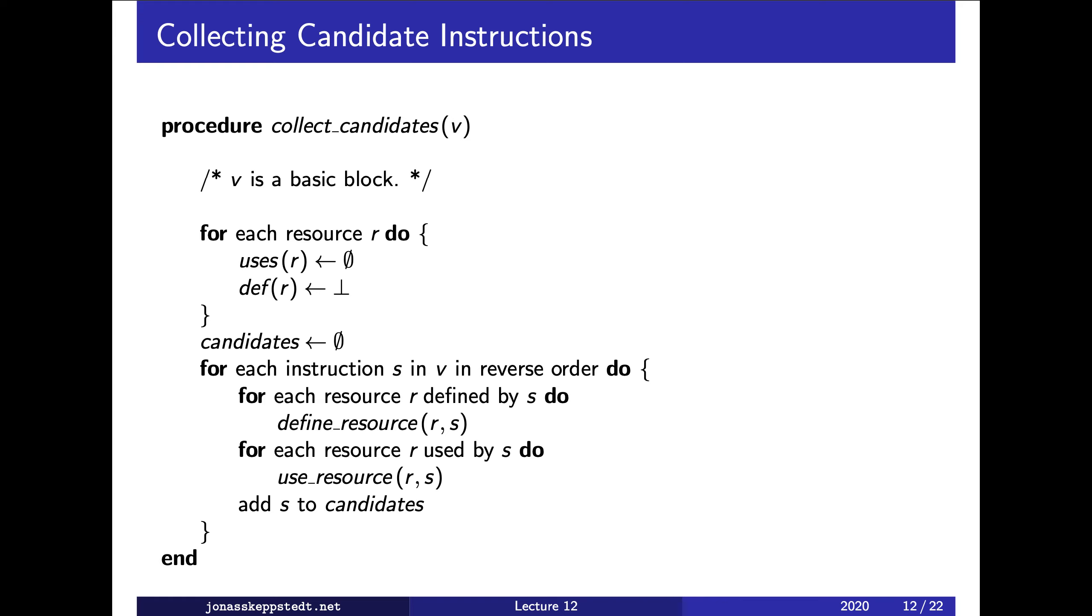We also want the initial set of candidate instructions. Recall we do a topological sort and we have a set of candidates which are the instructions which have no unscheduled predecessor in the graph. That set is what we also want to find when we construct this data dependence graph.